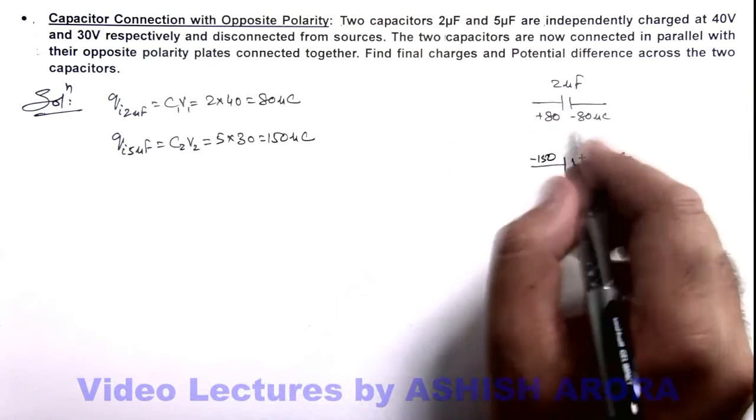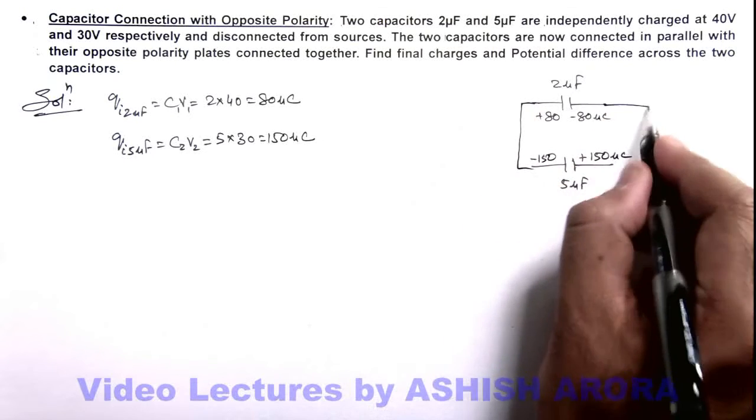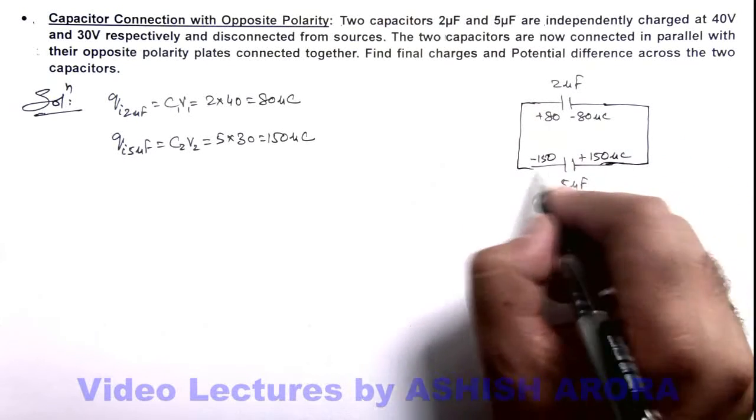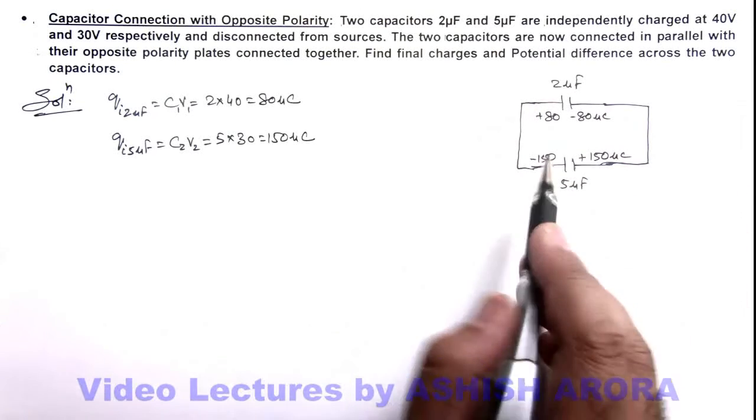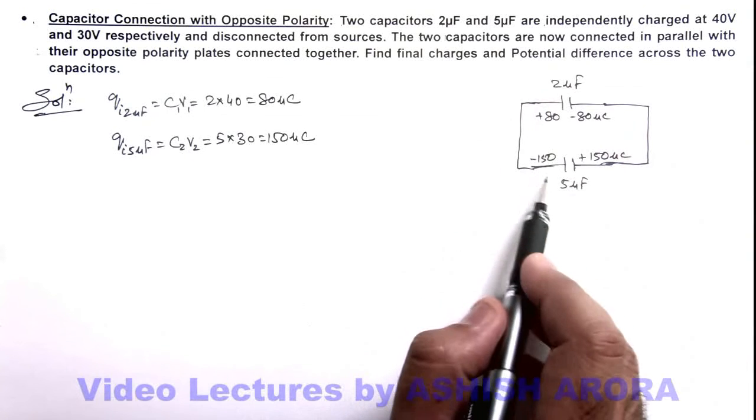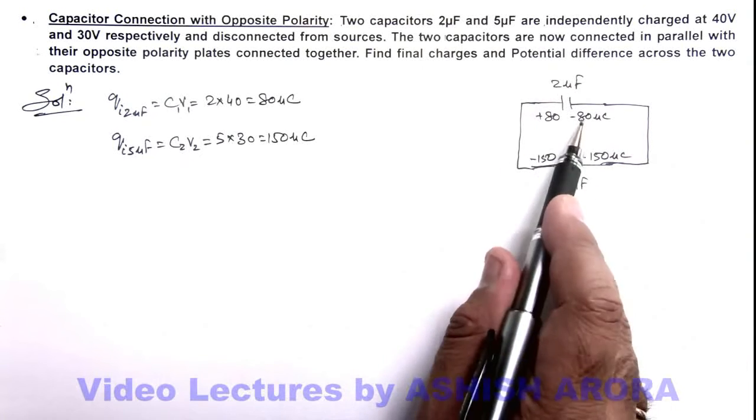These are disconnected and connected to each other with opposite polarity, as you can see in the picture I have drawn. On the left side of the two capacitors, the charge is minus 70 microcoulombs, and on the right side it is plus 70 microcoulombs.